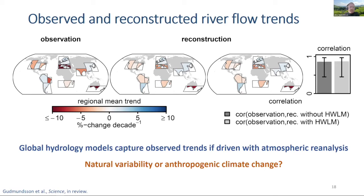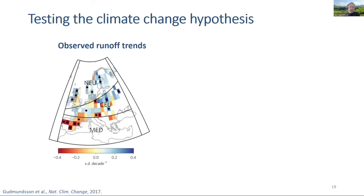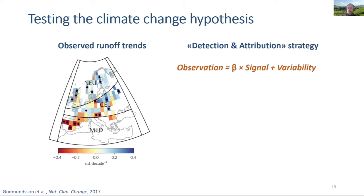This leaves the question of whether these changes occurred as a consequence of natural climate variability, or whether there's an externally forced anthropogenic climate change signal. For testing the climate change hypothesis, we fall back on the detection-attribution approach, which I'll briefly introduce with a European case study, where we investigated trends in European river flow and observed a tendency of drying in the south and wetting in the north.